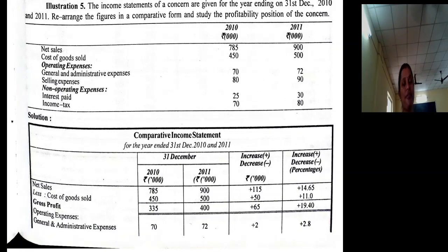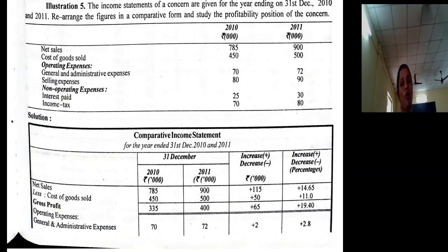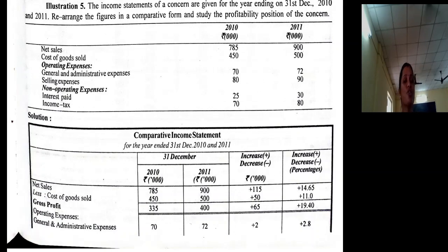Let us look at illustration 5. The income statement of a concern for the year ending 31st December 2010 and 2011 — re-arrange the figures in comparative form and study the profitability position of the concern. Just look at the difference between illustration 4 and illustration 5. In illustration 4, they did not ask us to study the profitability position, but here they asked us to study the profitability position.